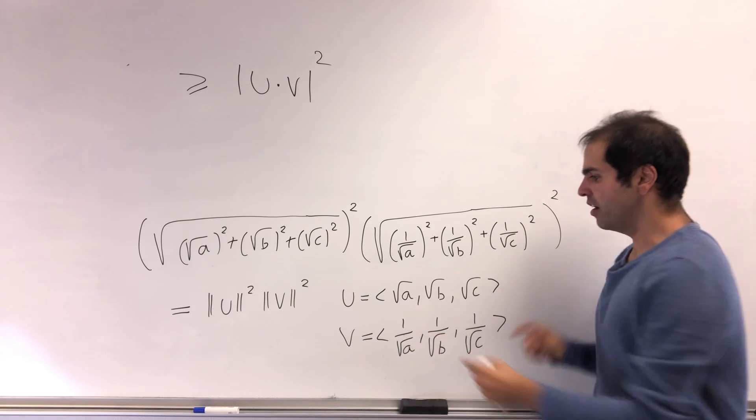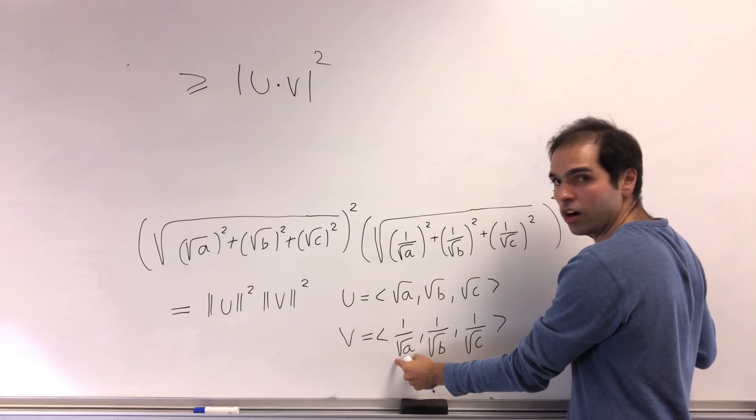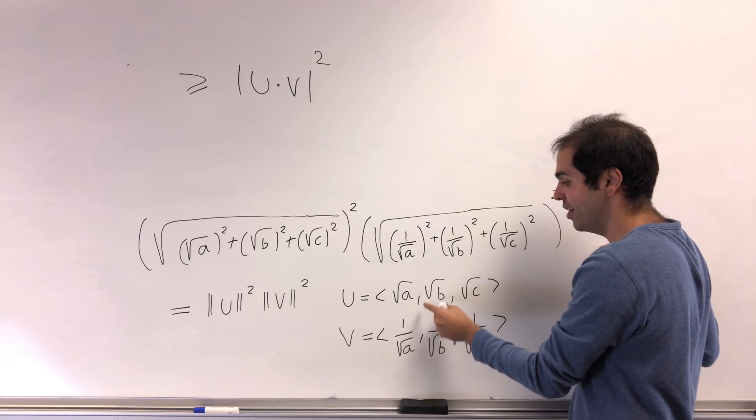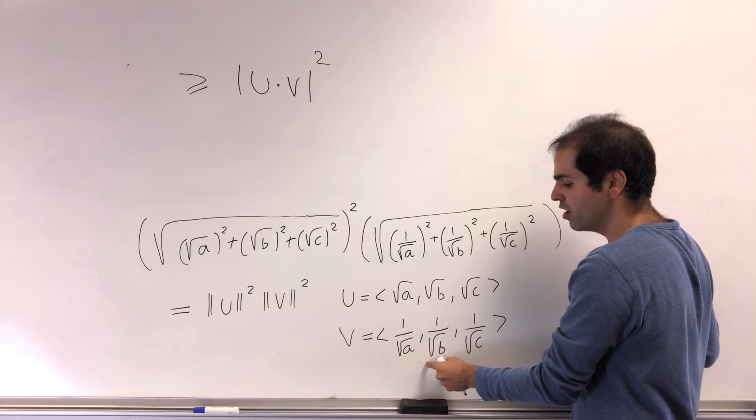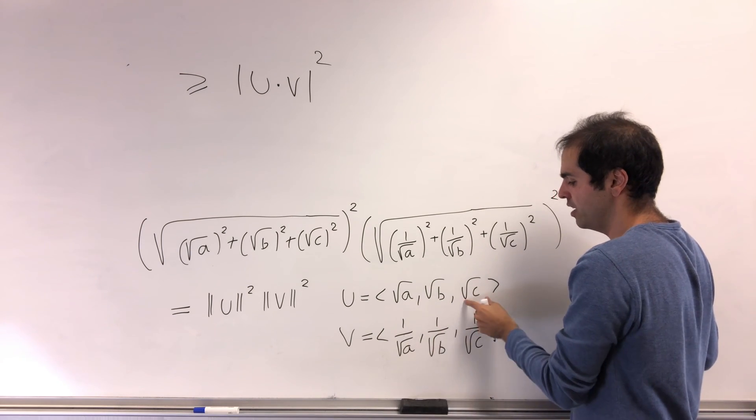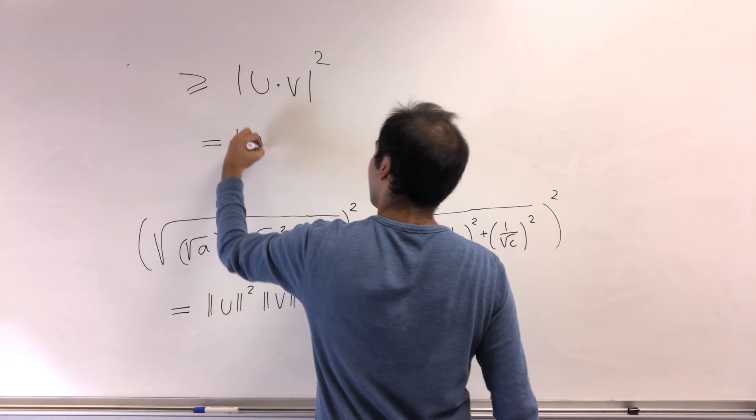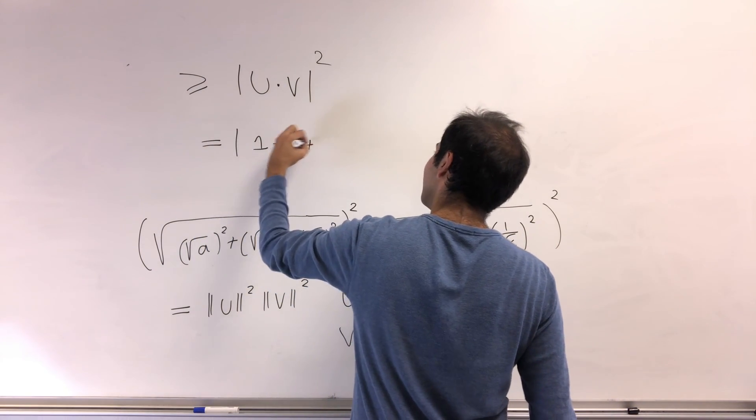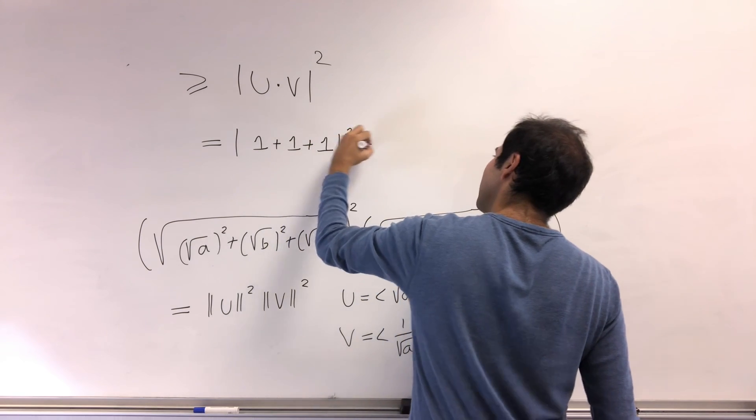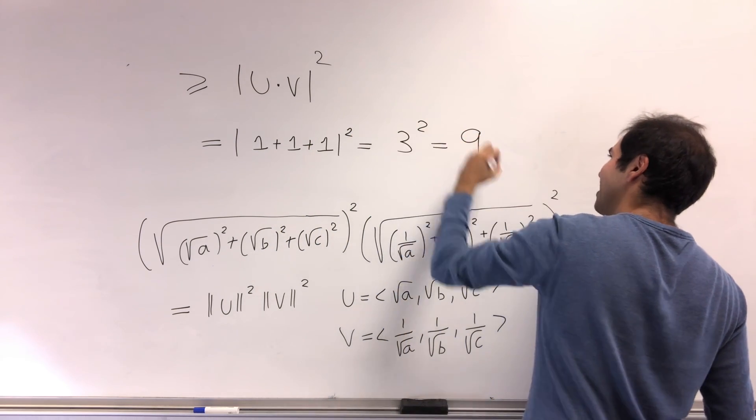But now what is the dot product? Well, √a × 1/√a, which is 1, √b × 1/√b, which is 1, and here also 1. So what you get is |1 + 1 + 1|², and that's basically 3² = 9.